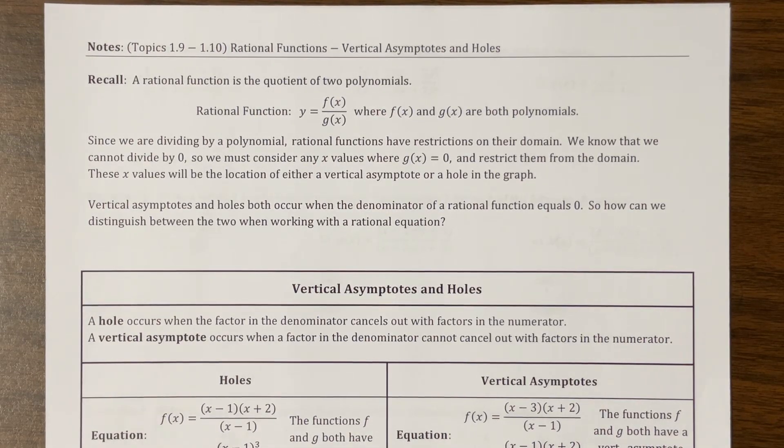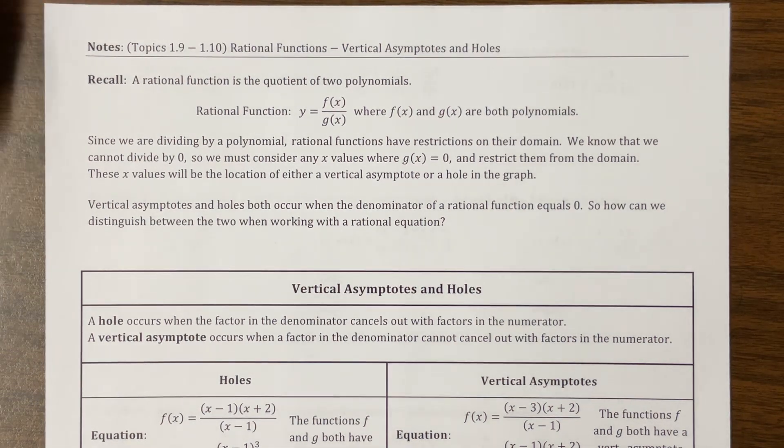Howdy, A.P. Briegel. It is Ms. Kosh. I'm looking at Mr. Passwater's notes from 1.9 and 1.10, and he starts to talk about vertical asymptotes and holes.